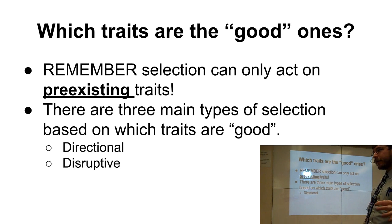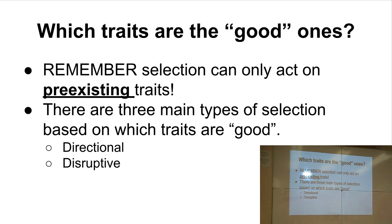Based on which traits are better, we found three main patterns of selection: directional selection, disruptive selection, and stabilizing selection. These are the three types.